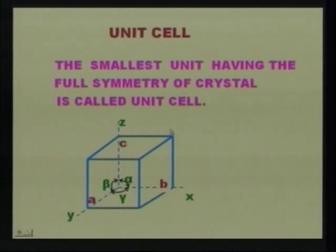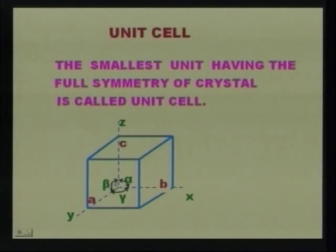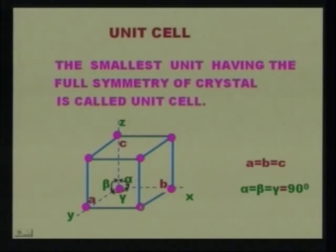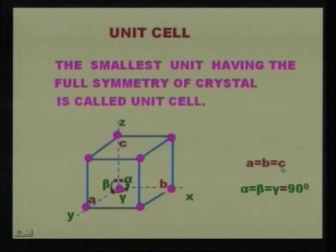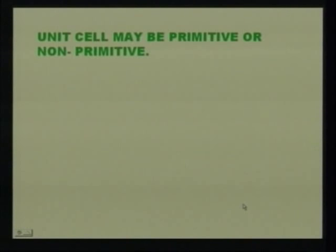Looking at the unit cell diagram, the sides are labeled b, c, and a. The angle between b and c is alpha, between c and a is beta, and between a and b is gamma. In the unit cell, atoms are arranged at all the corners. The dimensions of the sides are a = b = c, and the angles are alpha = beta = gamma = 90 degrees. Unit cells can be divided into two types: primitive or non-primitive.